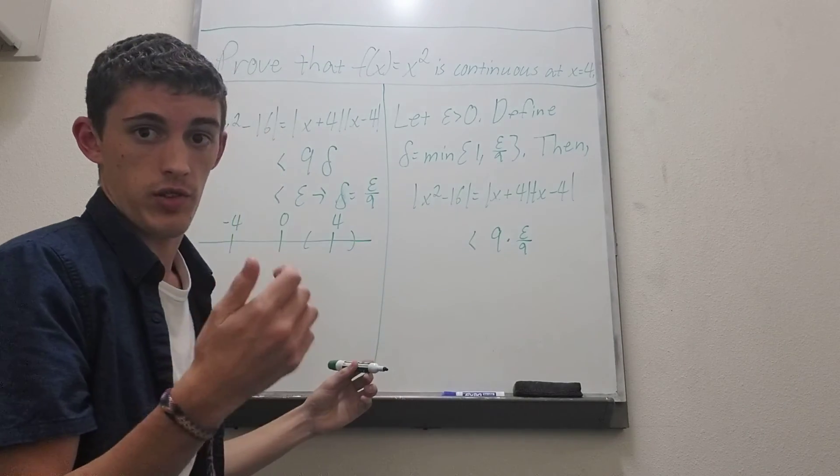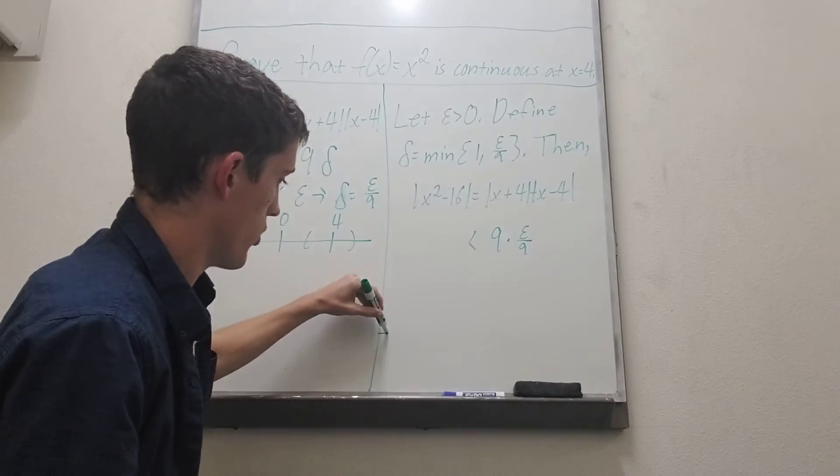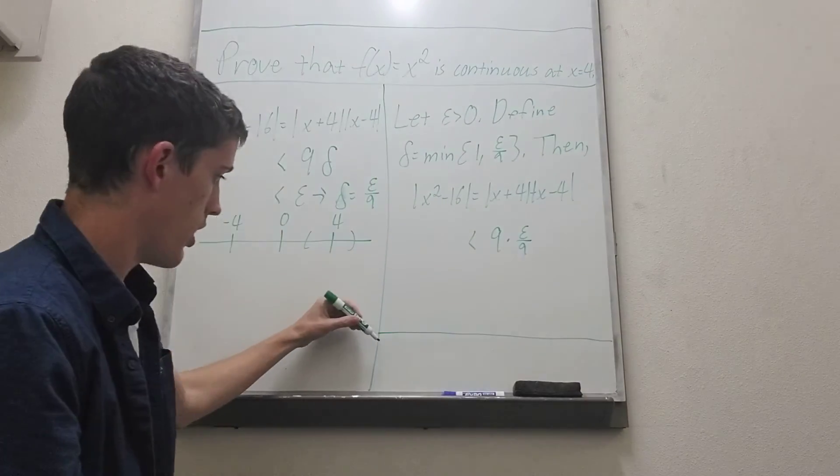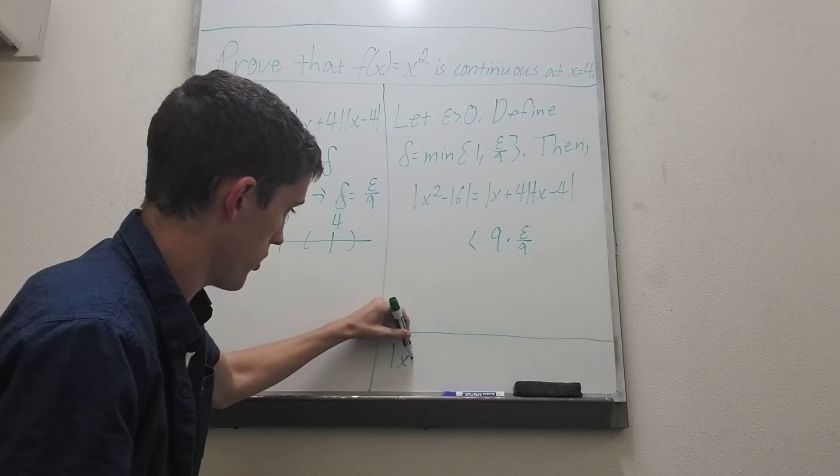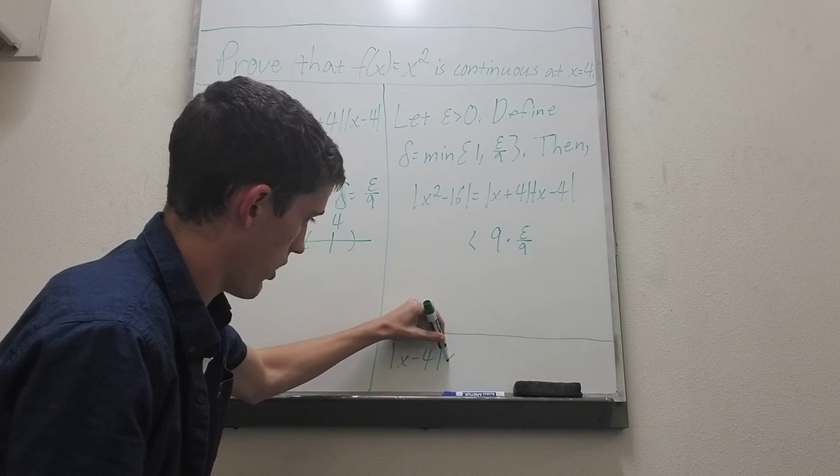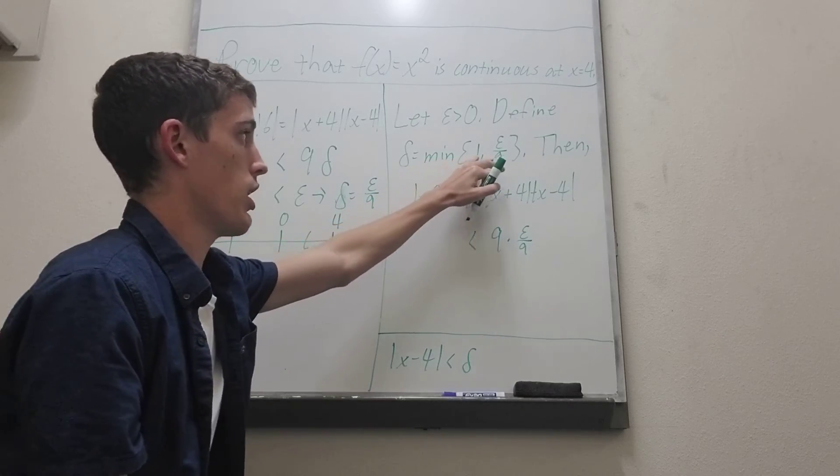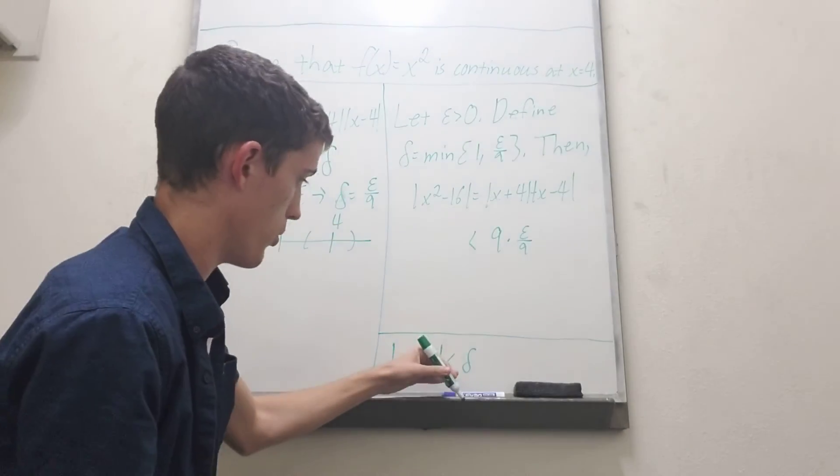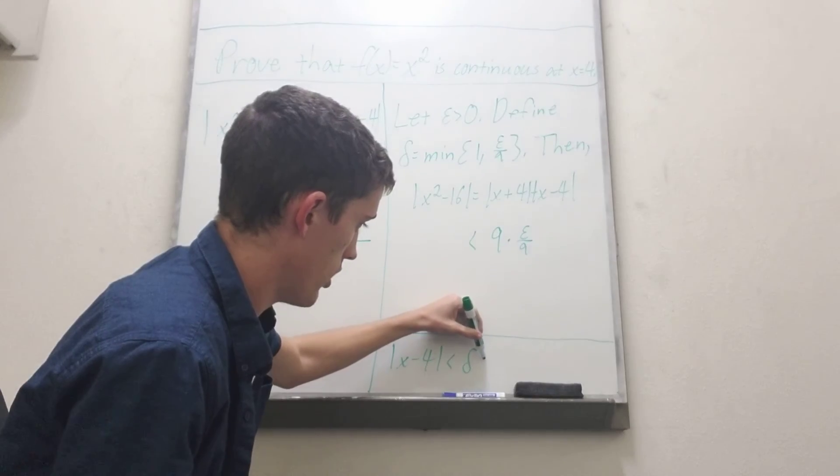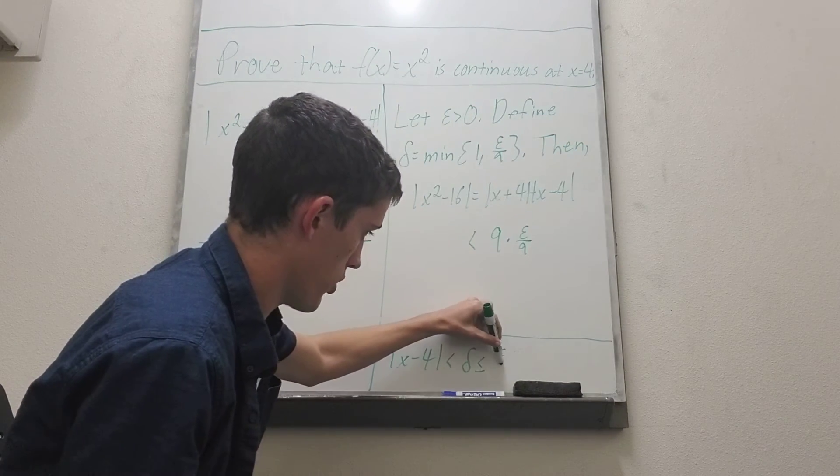Now there is actually some logic here. So x minus 4 is always less than delta. But delta is the minimum of 1 and epsilon over 9. So delta has to be less than or equal to epsilon over 9.